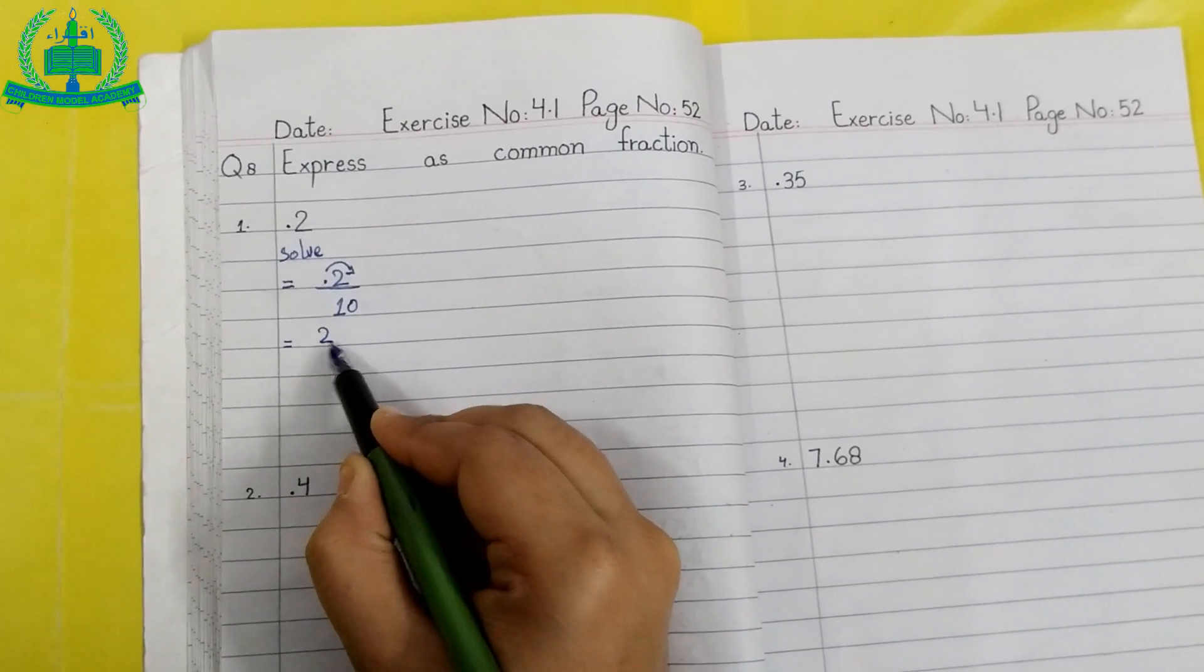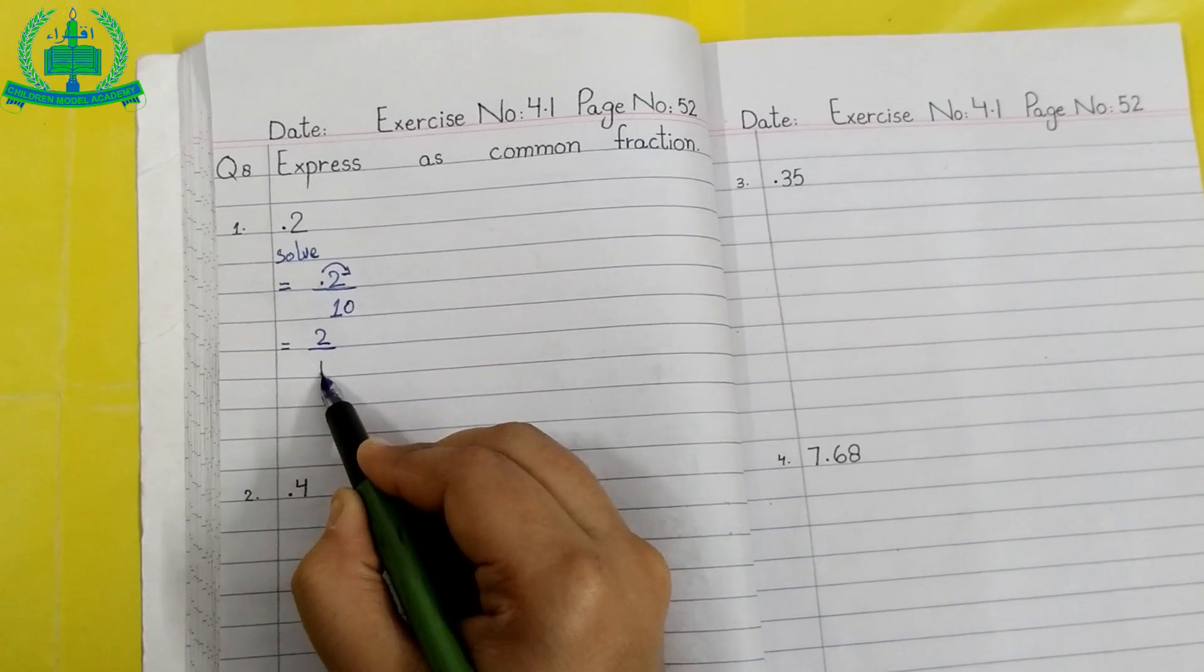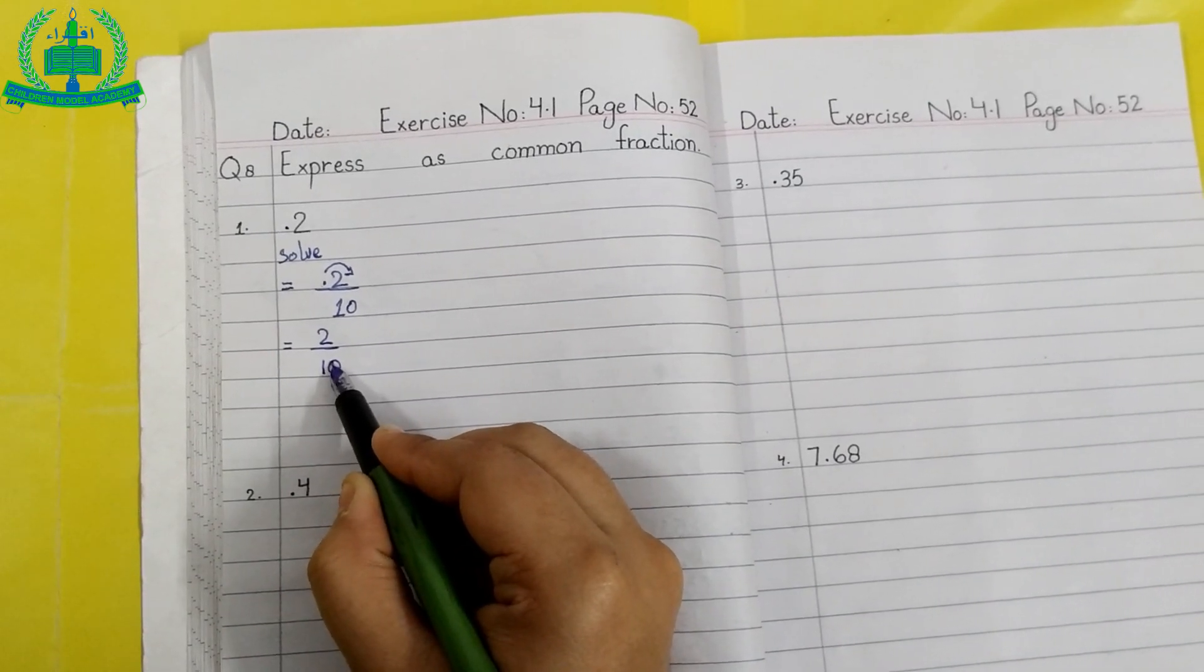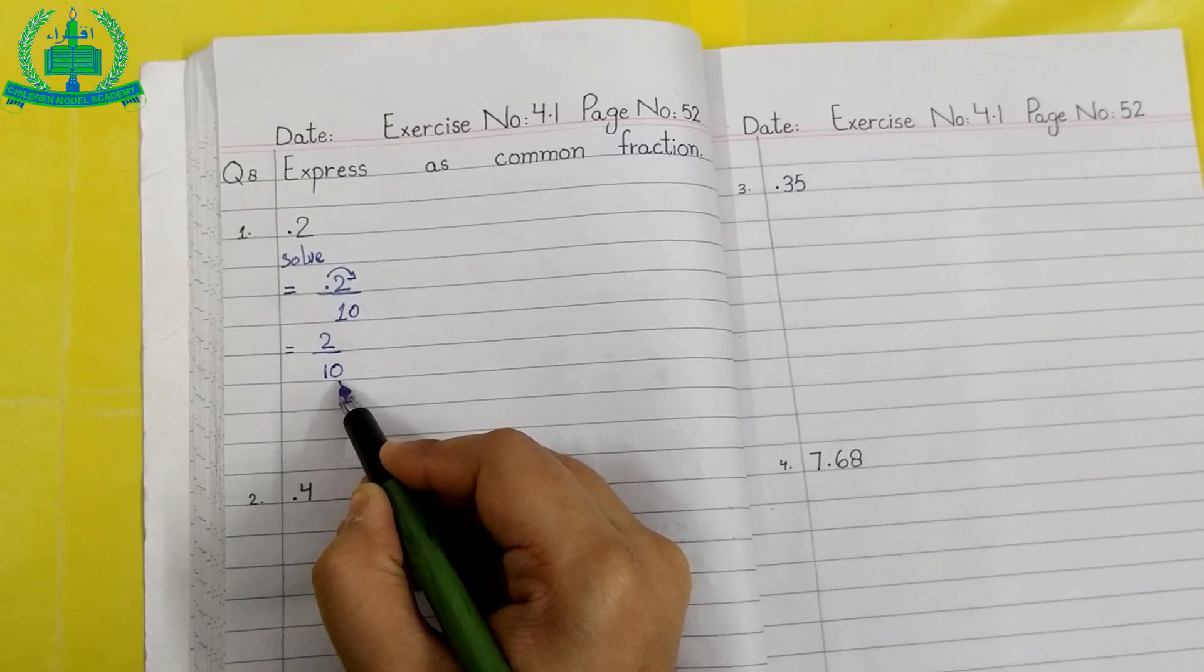So we write 2 upon 10. This is common fraction and this is the answer.